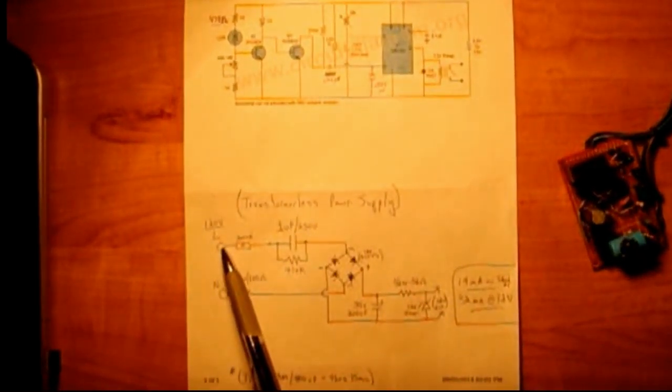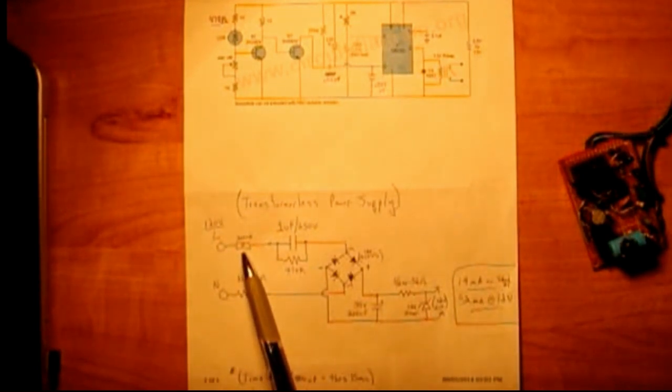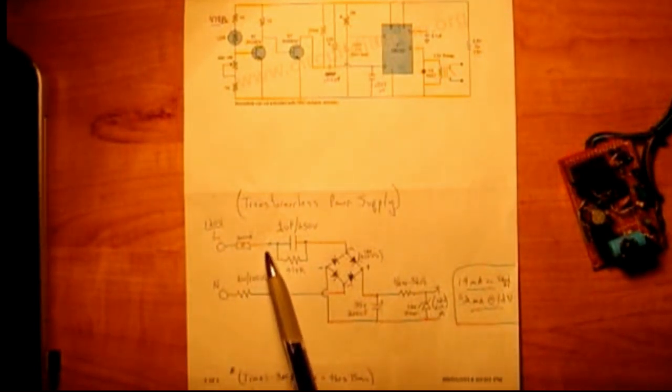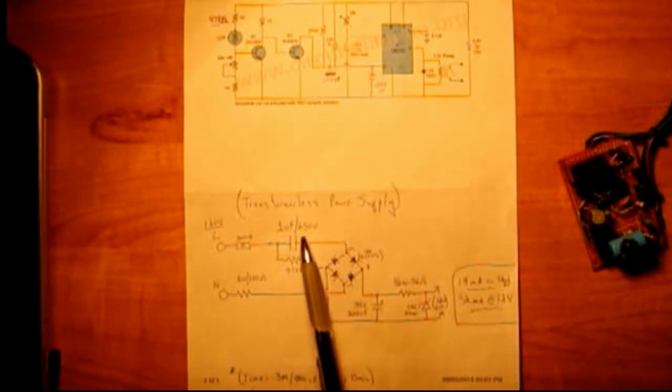Using 120 volts, you have your line. There's your neutral. 200 milliamp fuse. Have to have that for safety. After the fuse, the current will flow through a 1 microfarad, minimum 250 volt capacitor.